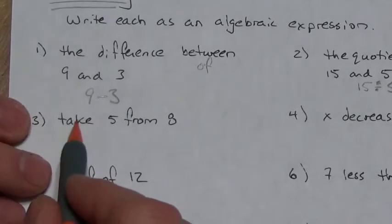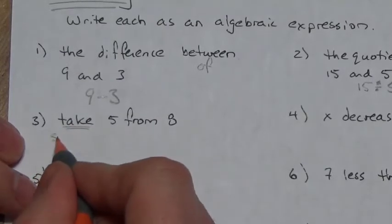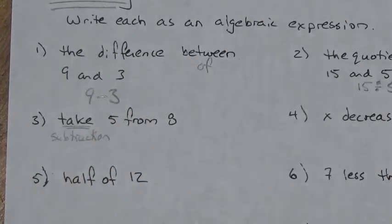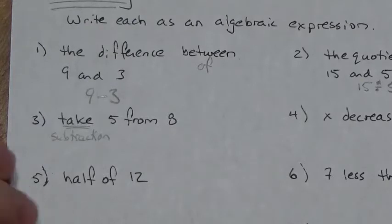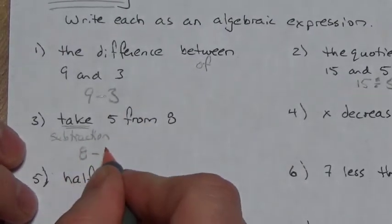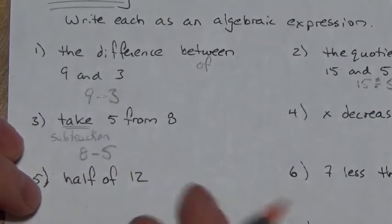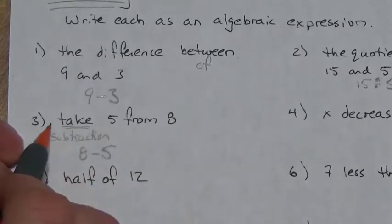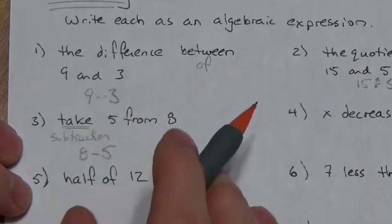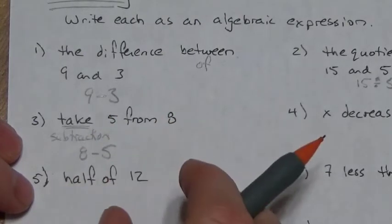Now: take five from eight. The word 'take' implies subtraction. For subtraction, order is significant. I am taking five from eight — I start with eight and I'm removing five, so it's got to be eight minus five. Often people understand that's subtraction but write five minus eight simply because five comes first in the description. But eight is the pre-existing value here.